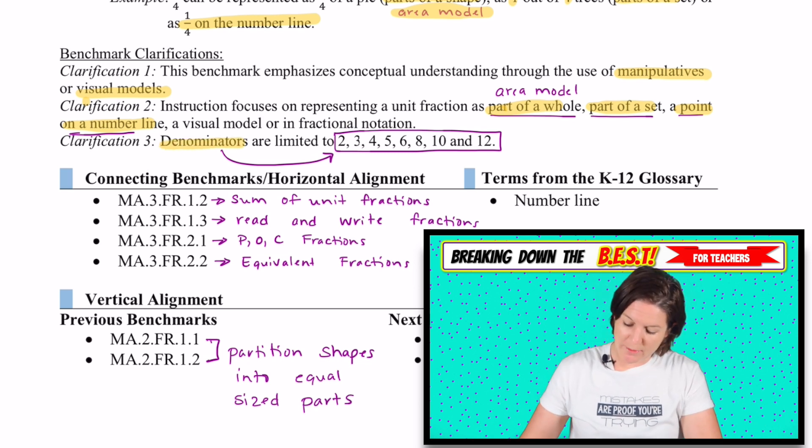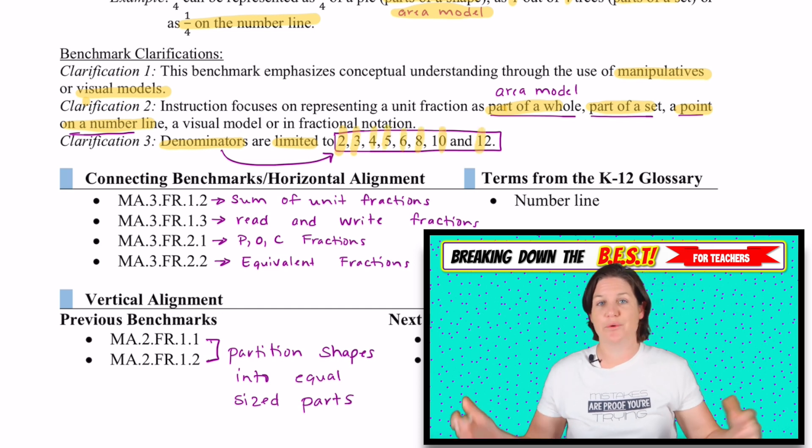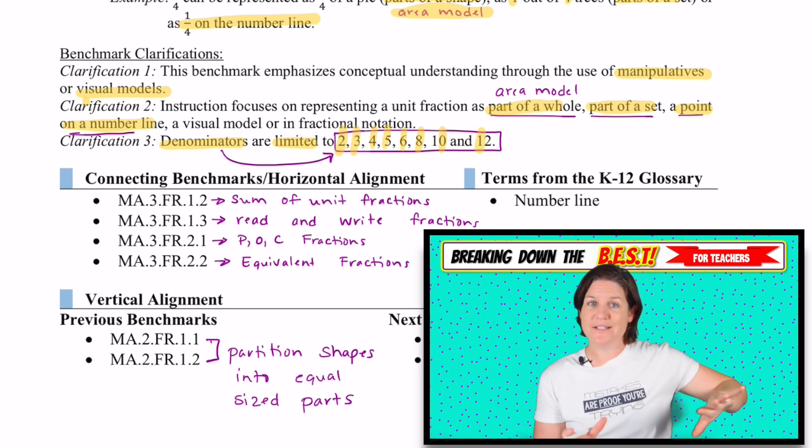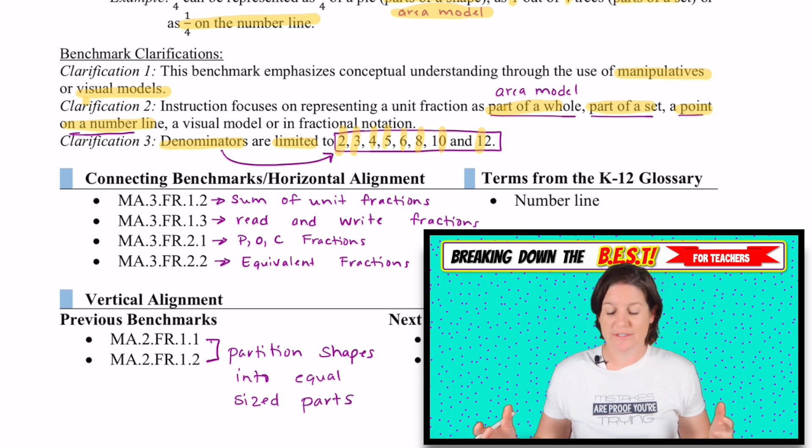And here's what I was talking about with our denominators being limited to 2, 3, 4, 5, 6, 8, 10, and 12. For instance, if you see a fraction that has sevenths, you can go ahead and tuck that one to the side. Don't worry about it having a denominator of seven. Try to focus on limiting to these denominators right here.